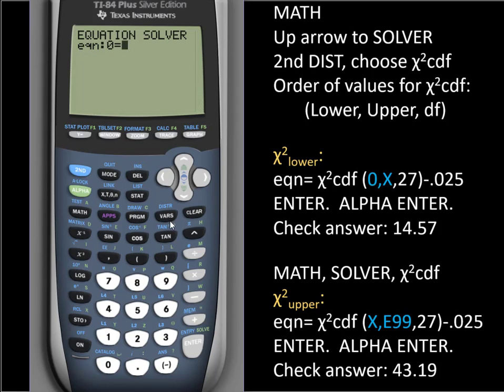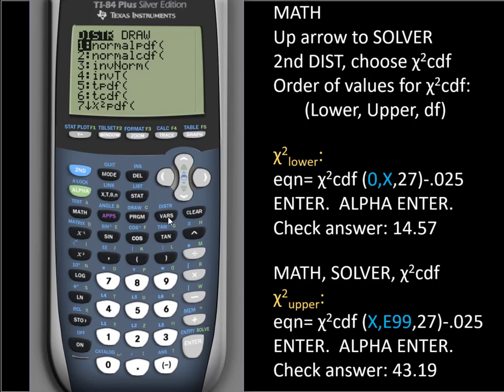If it's the function you want to use next, once we have equation zero equals, we go to second vars, which takes us to the distribution menu. And we scroll down to get to chi-square CDF.